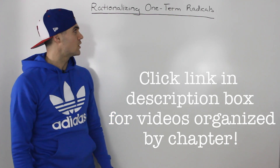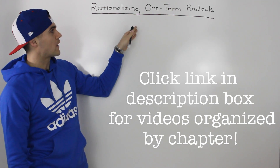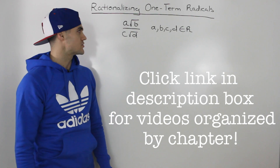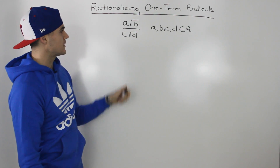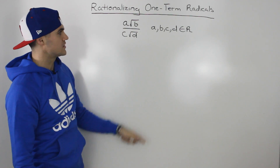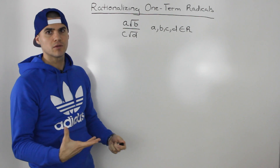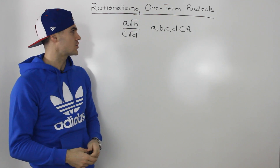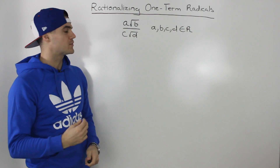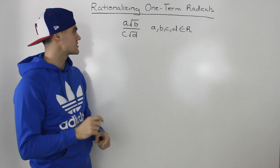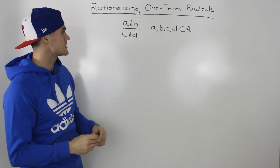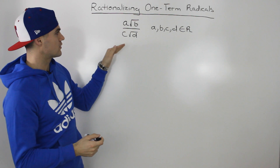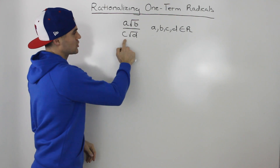What's up everybody? In this video, we're going to go over rationalizing one-term radicals. One-term radicals usually take this form: a root b over c root d, where a, b, c, and d can pretty much be any real number, but usually they're just some kind of integer. They're called one-term radicals because whatever you're rationalizing, whether the numerator or the denominator, it only has one term.